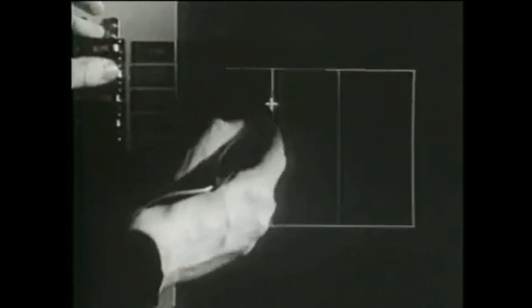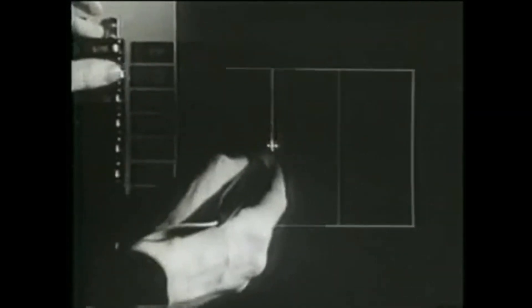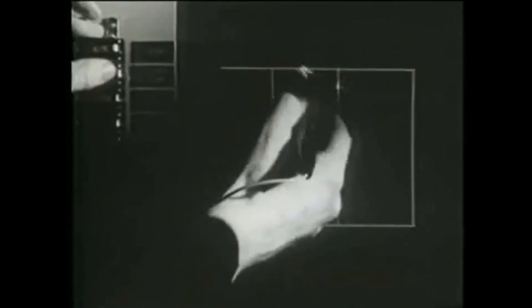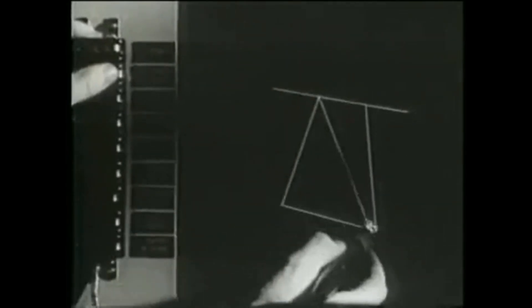Unlike earlier computer applications, which were batch-oriented, Sketchpad was interactive. A Sketchpad user sketches directly on the computer display with a light pen. The light pen is used both to position parts of the drawing on the display and to point to them to change them. Using the light pen and input buttons, you can draw directly on the screen using a crosshair cursor.